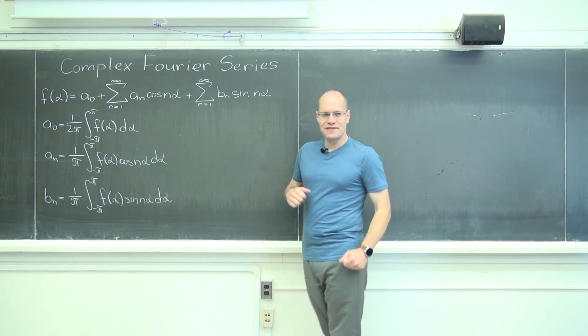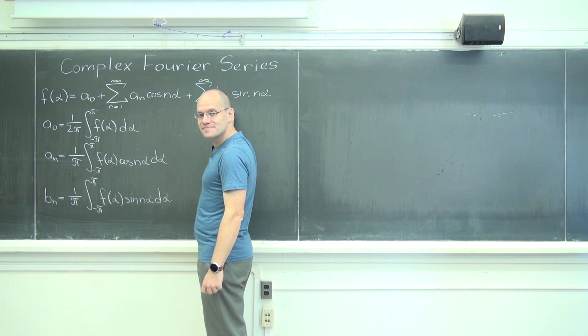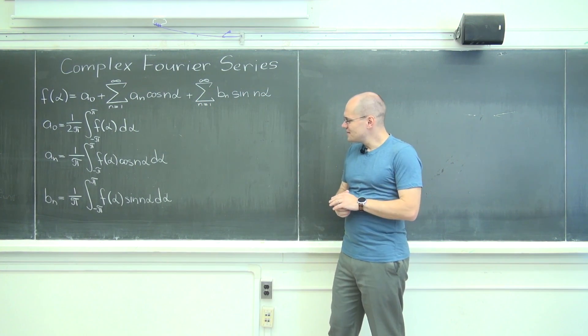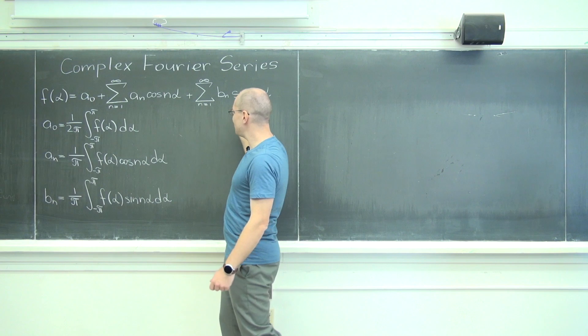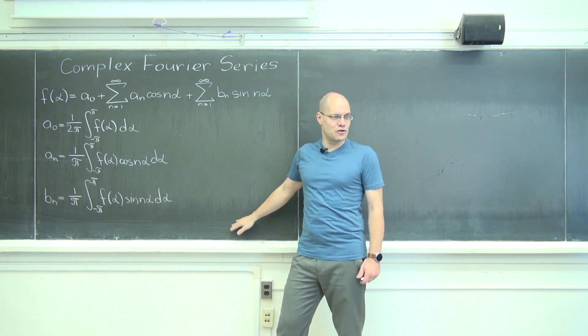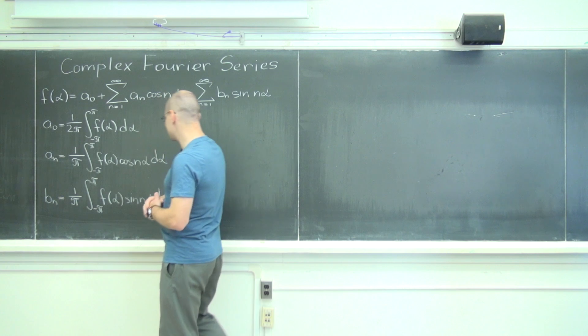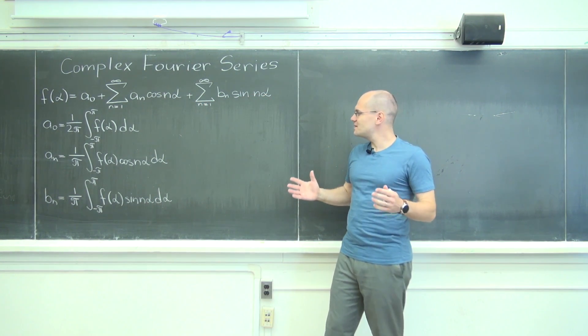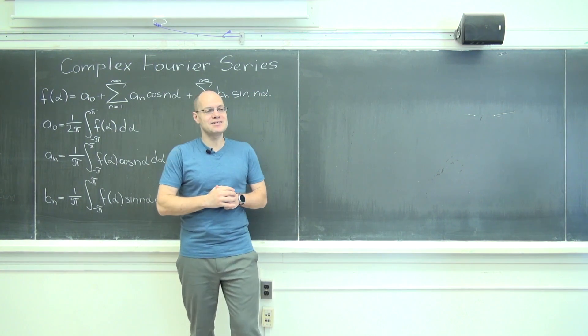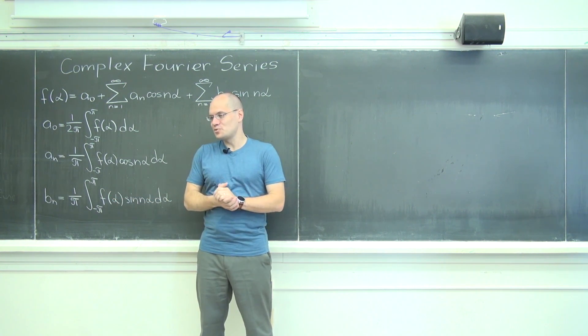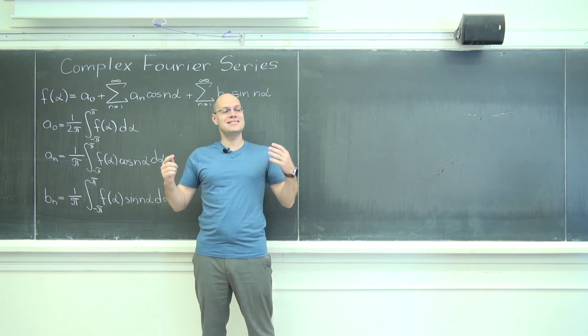But to get there we have to take a few intermediate steps that are quite meaningful on their own, and the first step will be to complexify the Fourier series. So far we have stated the Fourier series in terms of cosines and sines, and you have to admit it's a little bit unsatisfying because there are three different kinds of terms: constant, cosine, and sine.